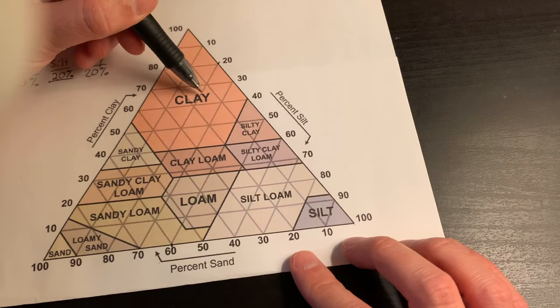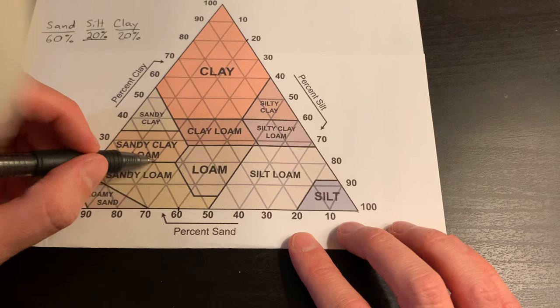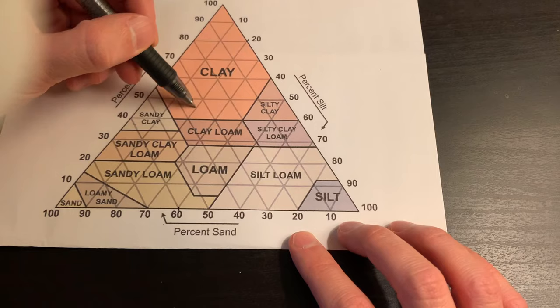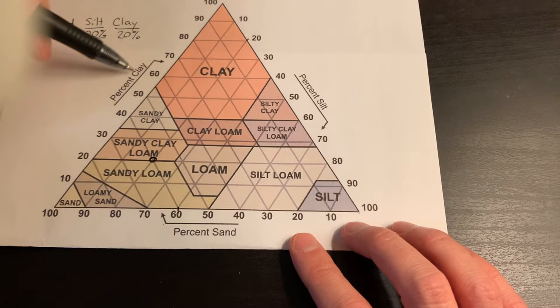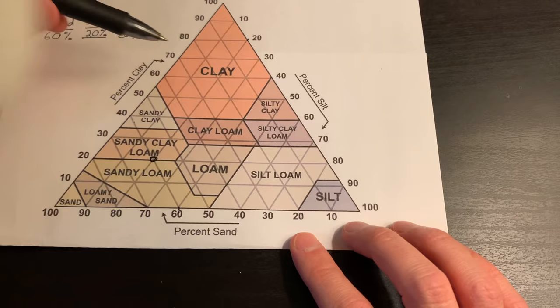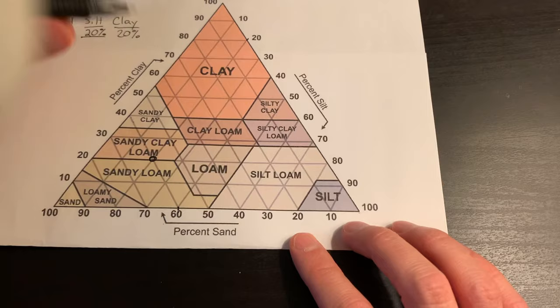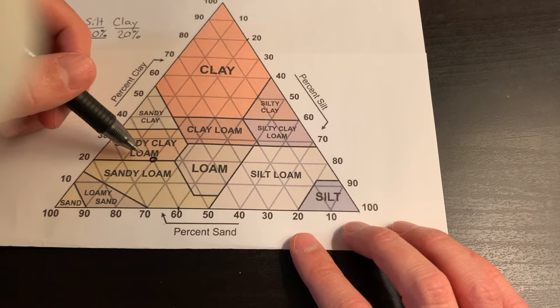So if we take the sand at 60 and bring it up this way, and bring the silt at 20 and bring it down this way, we follow the lines until they intersect. And to check that we did it right, we look at our third piece here, percent clay. See the arrow going horizontal, and so we go up to clay 20 percent. So for this first example, we are right on the edge of a sandy clay loam and a sandy loam.